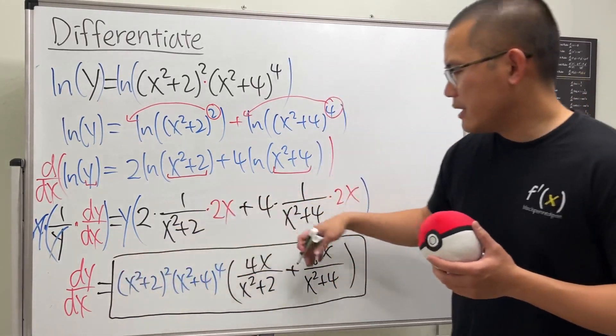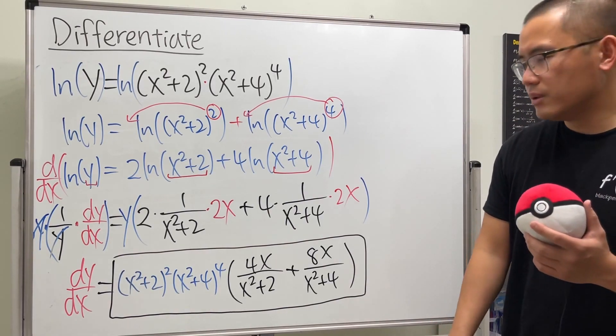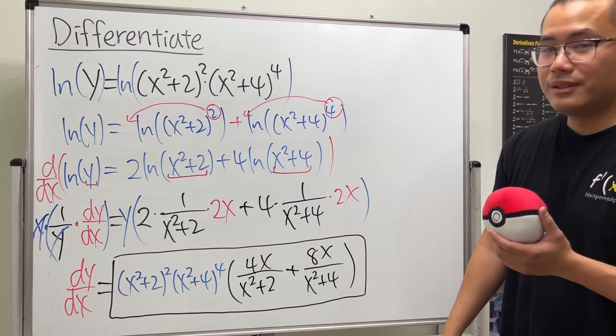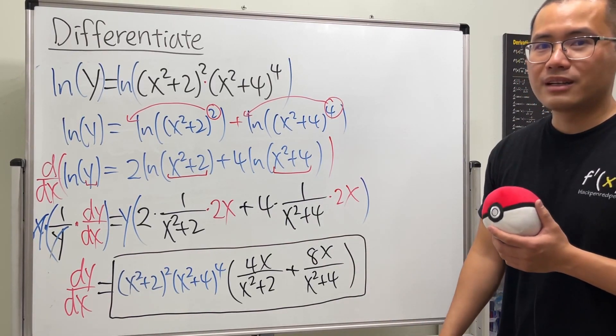You can multiply this in and simplify this a little bit more but there's no need to. This is definitely okay and this is the answer in the back of the book.